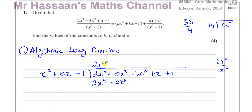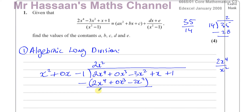Now we subtract: 2x to the power 4 minus 2x to the power 4 is 0; 0x cubed minus 0x cubed is 0; and minus 3x squared minus minus 2x squared gives minus x squared. That's what's left. Then bring the next two terms down because you have two terms on the outside — you bring down plus x and plus 1. You'll end up with three terms here because you'll multiply what comes next by all three terms.